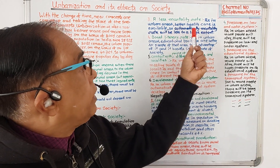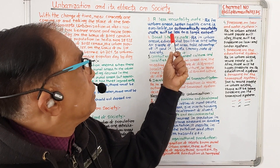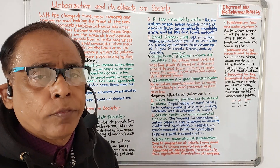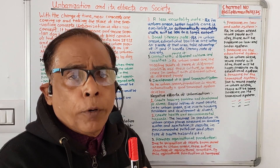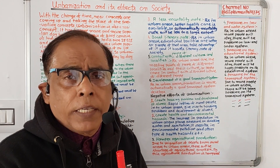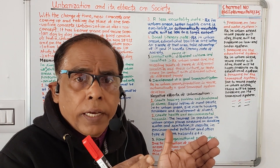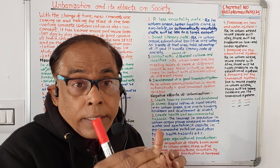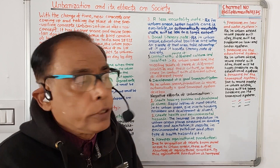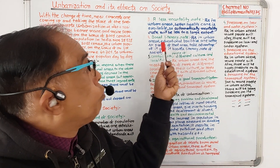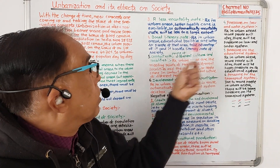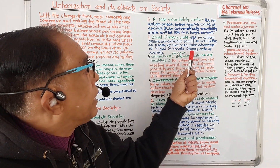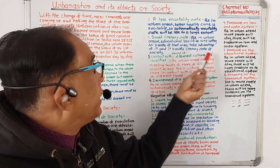Number three: less mortality rate. As in urban areas, better healthcare is available, so automatically the mortality rate will be less. The third positive impact of urbanization is that as good medical facilities are available in urban areas, the dying rate of people is reduced. Number four: boost in literacy rate. As in urban areas educational facilities are better, people take advantage of it and the literacy rate of society increases.